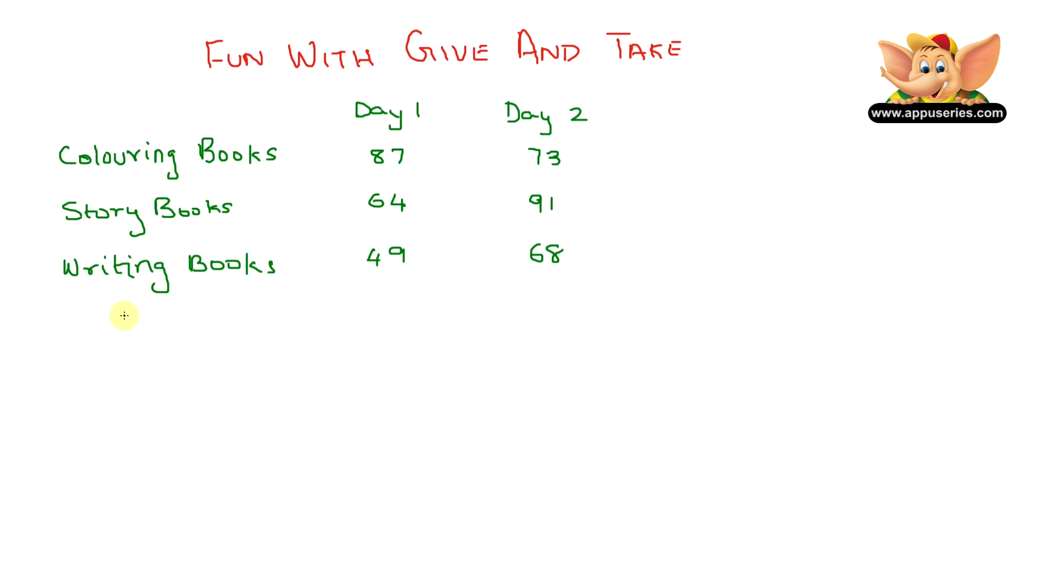Now here is the question. How many story books did Priya's father sell in two days? Let's have a look at our table and add them up. We know from this table that Priya's father sold 64 story books from day 1, plus he sold 91 story books from day 2.